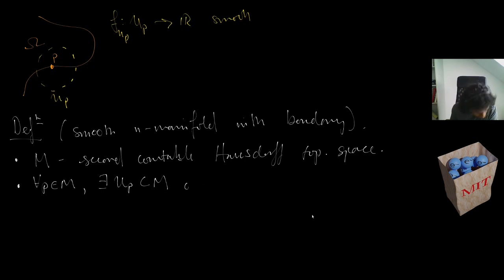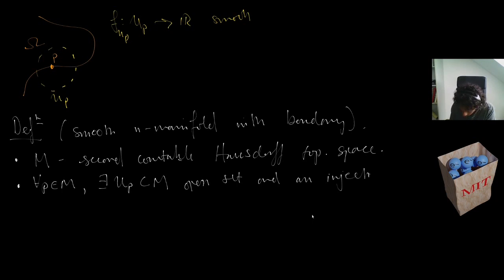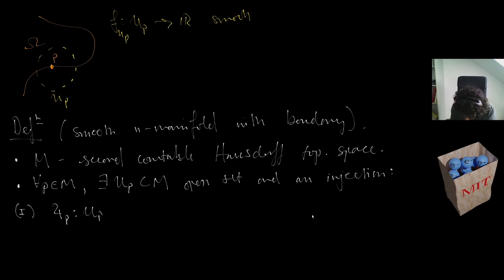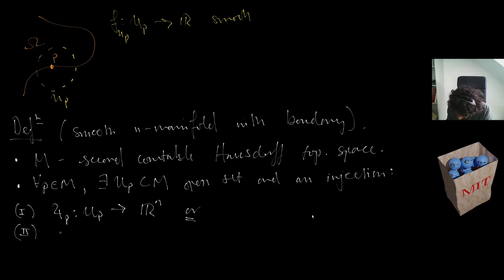The injection ψ_p either maps from U_p to R^n, or maps from U_p to the upper half-space — the set of points where the last variable x_n is non-negative.